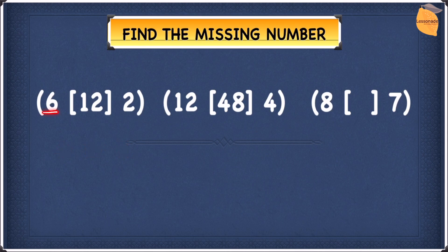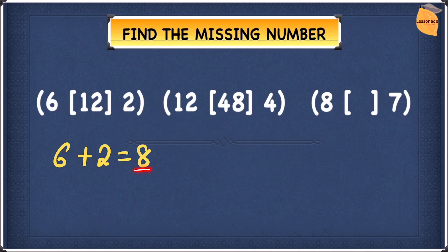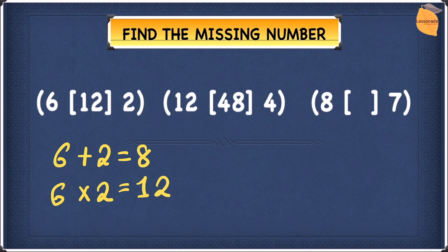We have 6 and 2 on the outside, so let's start by adding them. Six plus two gives you 8, and since 8 is nowhere near 12, this means addition does not work. So let's try multiplication. Six times two is going to give you 12, and the number in the middle is also 12, so multiplication is the rule we have to follow.